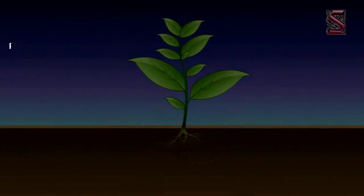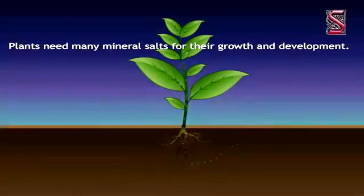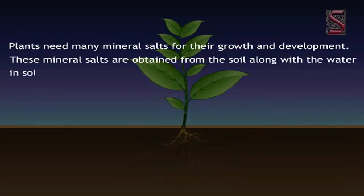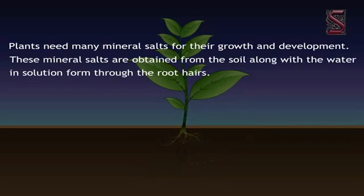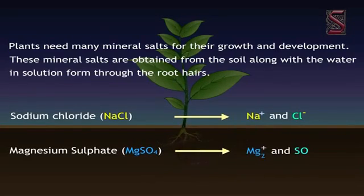So now you know how plants get their water, but what about the minerals? How do they go up a plant? Plants need many mineral salts for their growth and development. These mineral salts are obtained from the soil along with the water in solution form through the root hairs. The salts are in the form of electrically charged ions. Sodium chloride is in the form of Na+ and Cl-, and magnesium sulfate occurs as Mg2+ and SO4 2-.